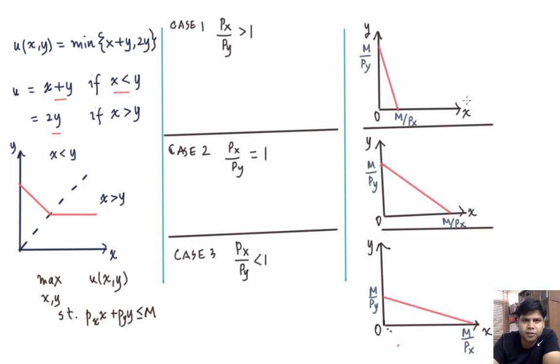So here are the three cases. Case 1, px by py is greater than 1 and the budget line is going to be steep. If px by py is equal to 1, then the budget line will have slope 1. And if px by py is less than 1, then the budget line will be flatter. So let us find the highest possible IC that passes through the budget line in this case.